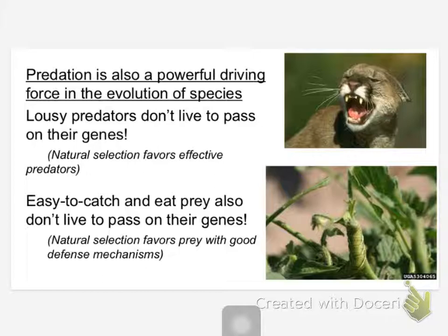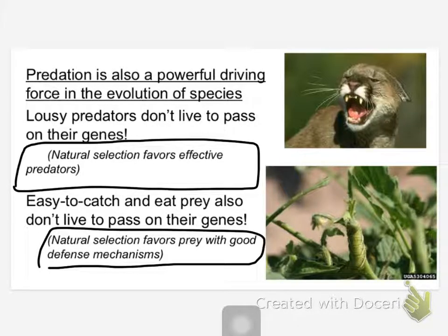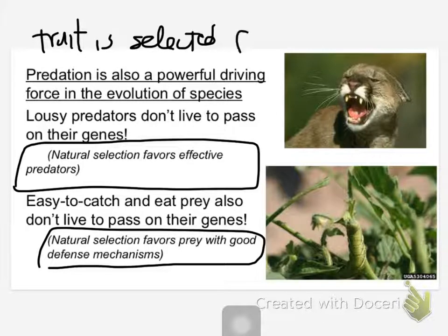And if you're a prey species — and lots of species are prey species — if you're real easy to catch, you probably don't get to pass on your genes. You probably don't survive long enough. So natural selection selects for good defense mechanisms. A trait that's selected for is something that's favored by natural selection, and that's the direction the species is going in. Predators get better every single generation.